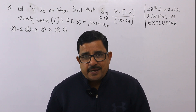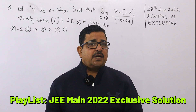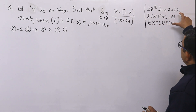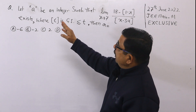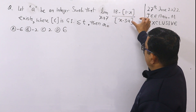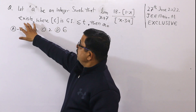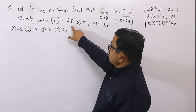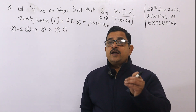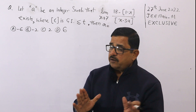Guys, problem solution series में ये question है जो JEE 2022 का है। जो questions में थोड़ा सा भी हमें लगता है कि detail solution की जरूरत है, वो यहाँ पे ले रहे हैं। ये सवाल पूछा गया था 27th of June 2022 morning session का question है। Let a be an integer such that limit x tends to 7 exists, and a की ही value निकालनी है।